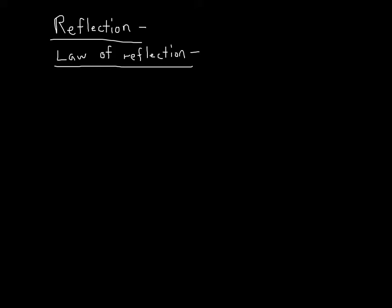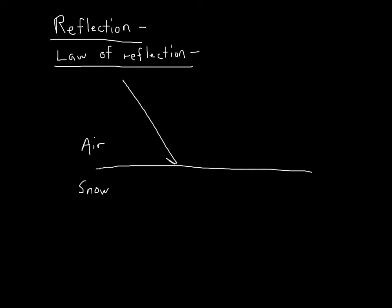In discussing how light moves in geometric optics, we usually start by discussing reflection and the law of reflection. Let's say I have a medium separating two surfaces — maybe air up here and light bouncing off the ground covered with snow. When a light wave comes in, I draw it as a little arrow and call it the incident wave. I draw a perpendicular line separating my surfaces, and the light that bounces off is called the reflection wave.